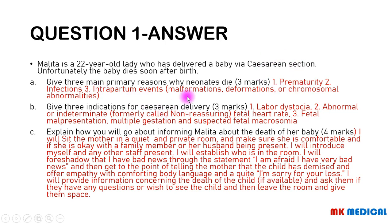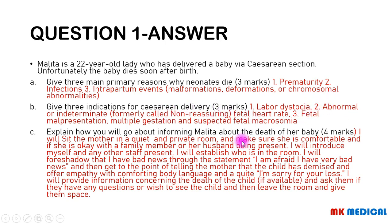Give 3 indications for caesarean delivery: labor dystocia; abnormal or indeterminate fetal heart rate — this was formerly referred to as non-reassuring fetal heart rate, so if there is fetal distress; malpresentations; multiple gestations; and even suspected fetal macrosomia. You can just pick 3 out of these.